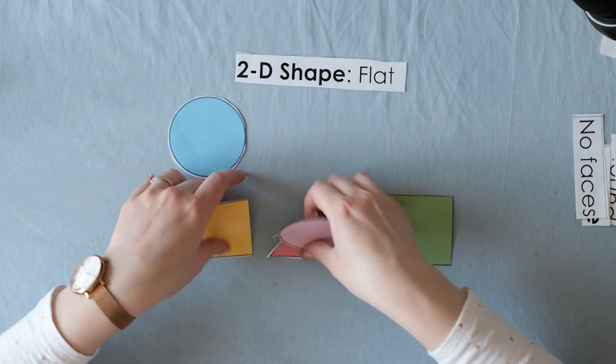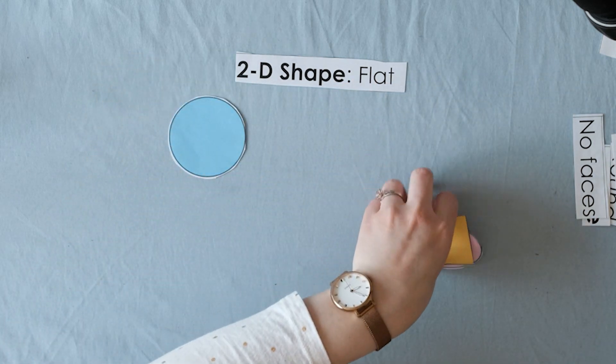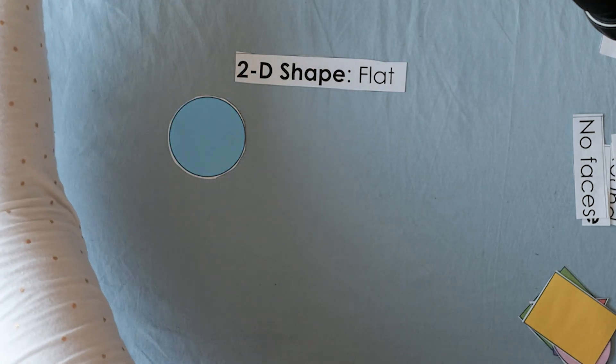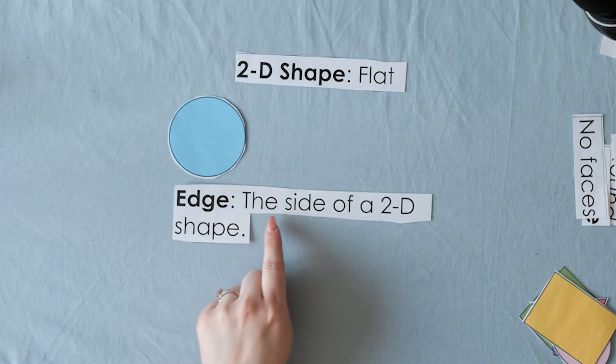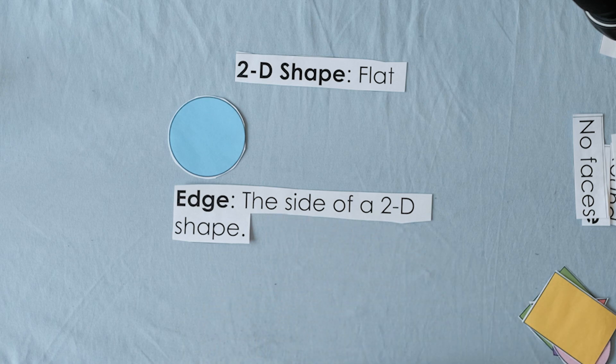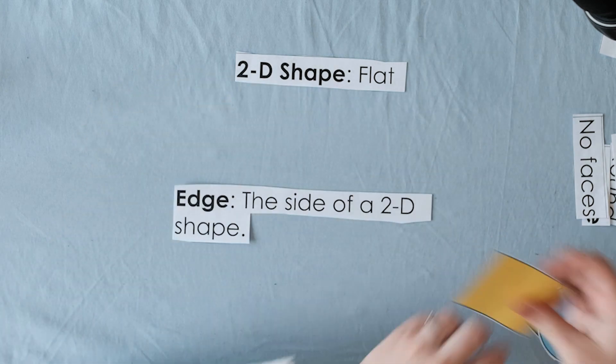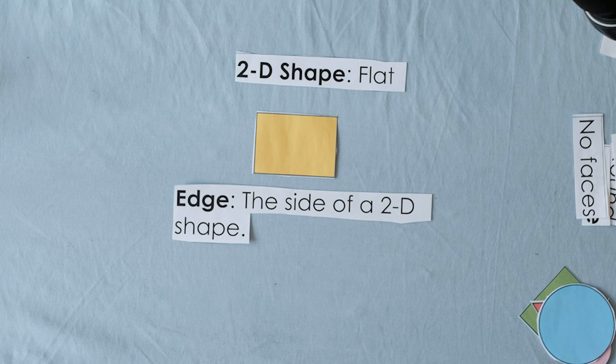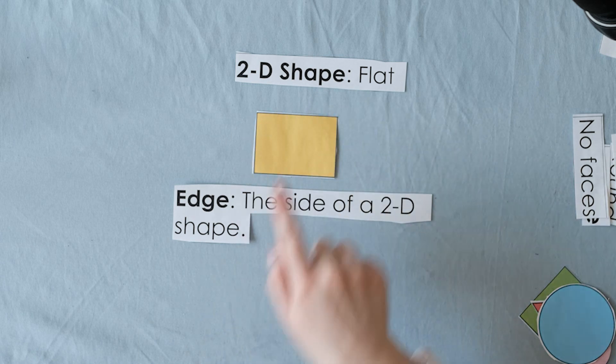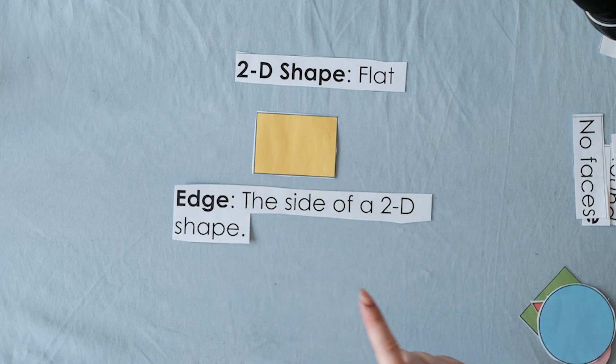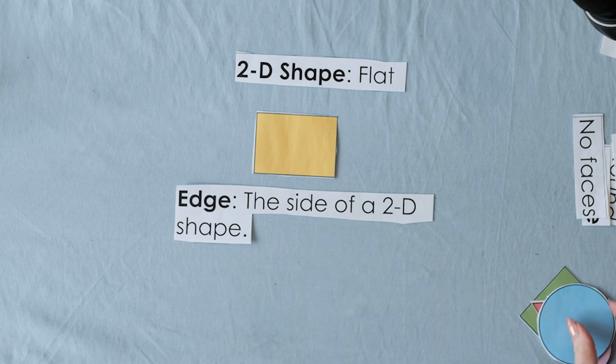Okay now a new thing that we're going to learn about is the word edge. So this word here, edge, is the side of a 2-D shape. So this rectangle for example has four edges. One, two, three, four. It's the outside lines. So edge, the side of 2-D shapes.